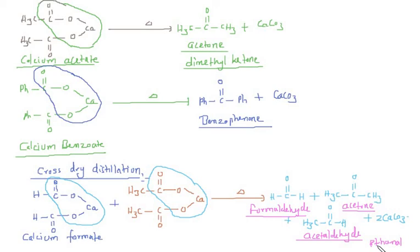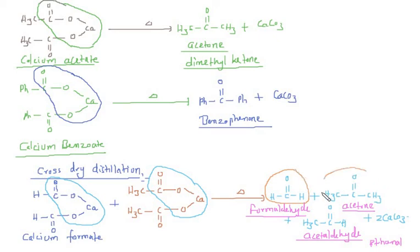If anyone asks which is the major product, in majority of cases it is the cross product — in this case, the aldehyde (acetaldehyde). It has been observed that the major product is generally the cross dry distillation product. The self-dry distillation products — formaldehyde and acetone — are minor. I hope you understood the video well, please share and subscribe, thanks a lot for watching.